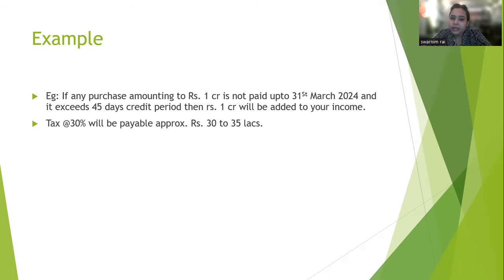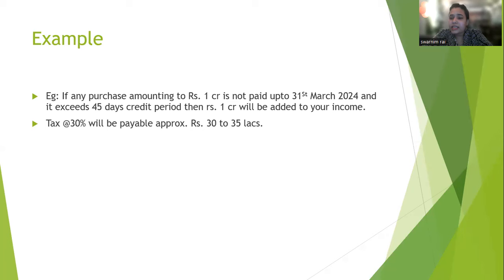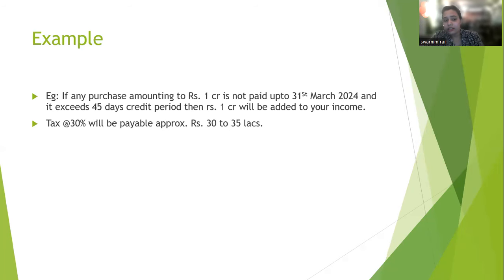According to this provision, you have to pay with interest and penalty. There are a lot of representations to the government because this is a very harsh provision for businesses. It can discourage people from buying from MSME enterprises, because 45 days is a very small credit period in business. Many payments take longer than that, so businesses may try to avoid buying from MSME to avoid this provision.